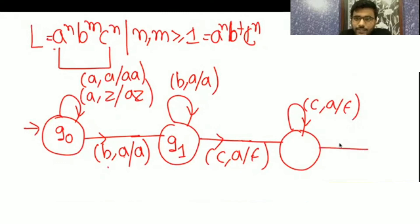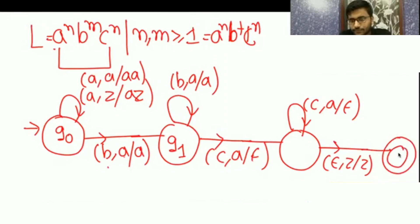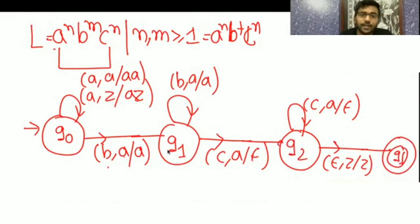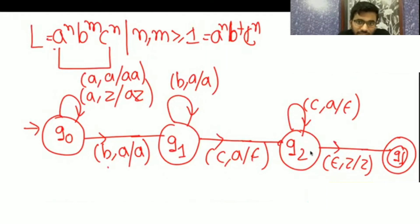Now with epsilon, z is replaced by z — I am changing the state. Tell me why I am changing the state: because now it is saying that you got c, there is no chance it will ever be b. After c there should not be b.